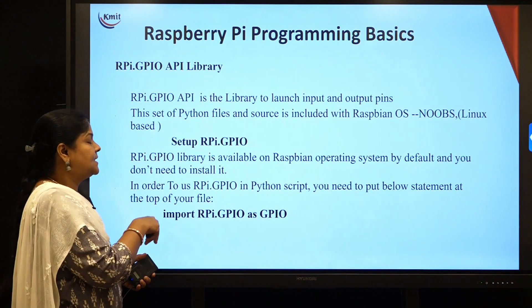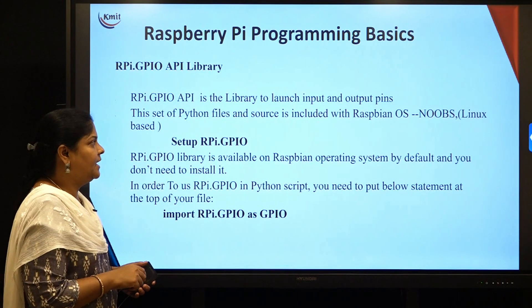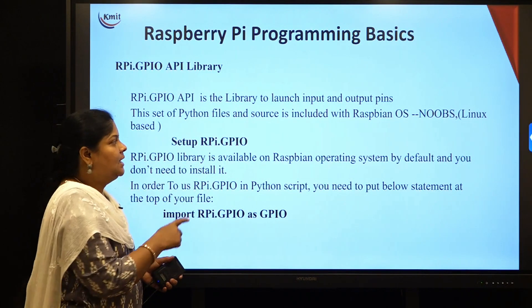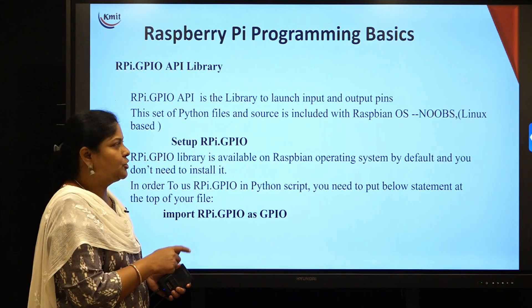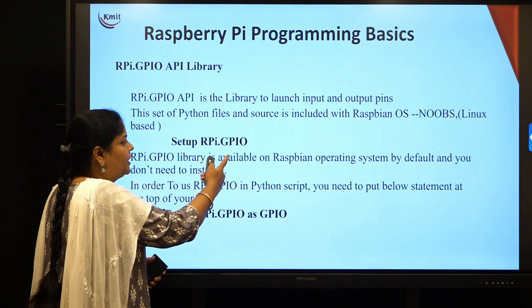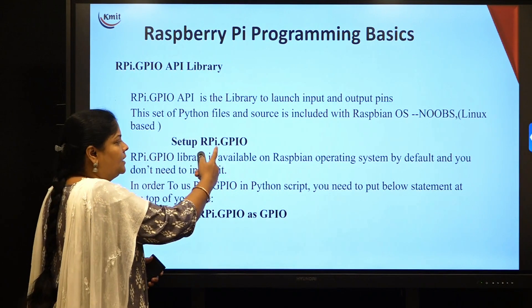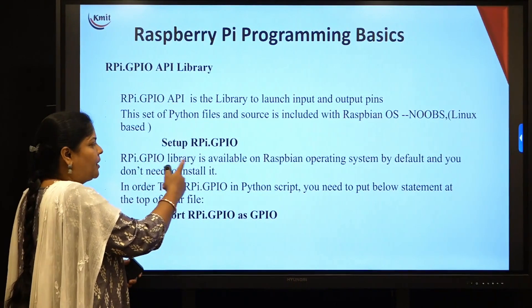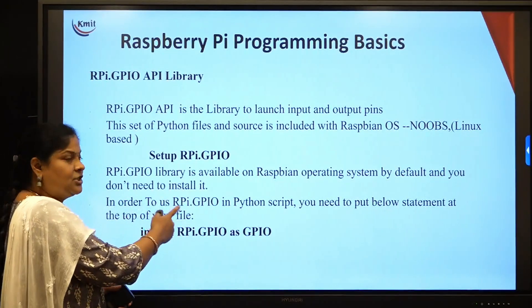To write programs for GPIO, the rpi.gpio API is a library used to control the input and output pins. The set of Python files and source is included with the operating system — Raspbian OS or Noobs OS, both of which are Linux-based. The rpi.gpio library is available in Raspbian OS by default, so you do not need to install it separately.